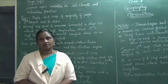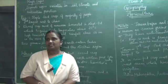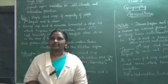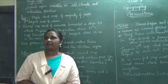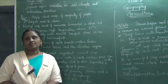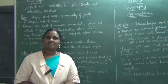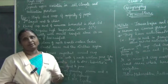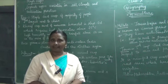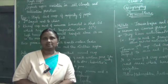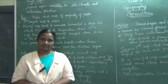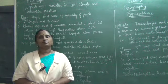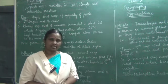Shri Gurubhya Namah, children. In the previous class I told you about agriculture — the types of farming: primitive subsistence farming, intensive subsistence farming, and commercial farming. Then we went to cropping patterns: Rabi, Kharif, and Zaid. Now we are going to see the major crops which are grown in India.